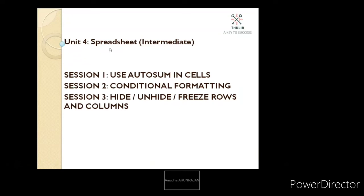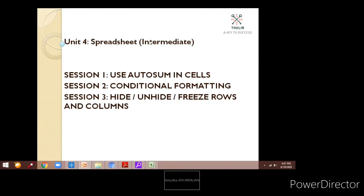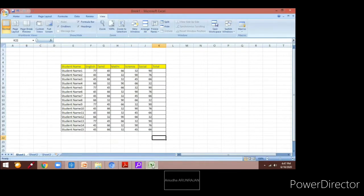Welcome to Thuleer. Today we will see the spreadsheet intermediate of class 10, unit 4. In this we will talk about session 1, 2, 3 — that is: use auto sum in cells, conditional formatting, and in session 3 we will talk about how to hide, unhide, and freeze rows and columns. These are all the things which I will be showing to you practically.